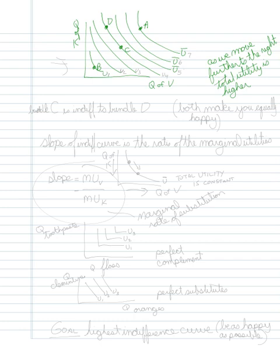And, again, each of these have a constant level of total utility. And, as we move further to the right, the total utility is higher. So, this would be U1, U2, U3, U4, U5, U6, U7. That U7 has the highest total utility. The relationship between C and D is that bundle C is indifferent to bundle D. Meaning, both make you equally happy.